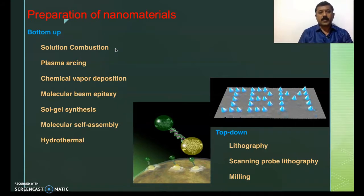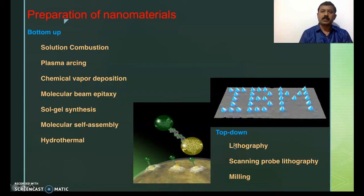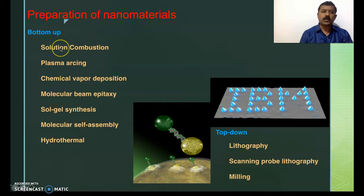How do we prepare nanomaterials? There are two methods. One is the top-down approach: we start with bulk material and go towards nano, either by milling or lithography. The other is the bottom-up approach: we start from atoms and build nanostructures by placing atom by atom. Various methods are available: solution combustion, plasma arcing, chemical vapor deposition, molecular beam epitaxy, sol-gel synthesis, molecular self-assembling, and hydrothermal synthesis. These are called bottom-up approaches.